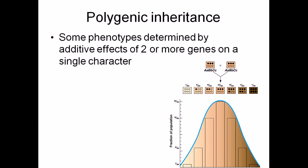Polygenic inheritance is determined by the additive effects of two or more genes on a single character. For example, if you look at the skin color of human beings, most of the characters we see are much more complicated.